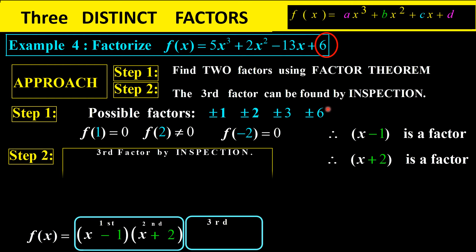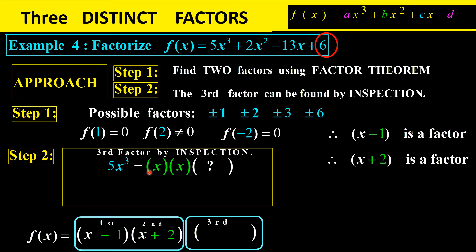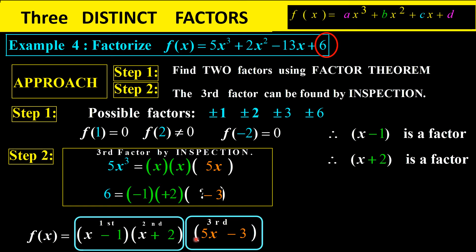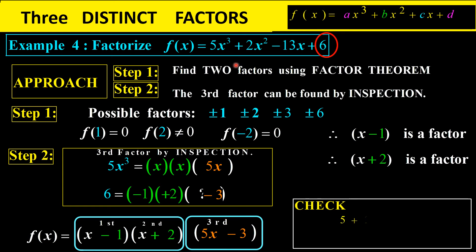With factors x minus 1 and x plus 2, we find the third by inspection. The leading term is 5x cubed; we already have x times x, so we need a 5x. The constant is 6; negative 1 times 2 is negative 2, and negative 2 times negative 3 gives 6, so the third factor is 5x minus 3. Verification: 5 plus 2 minus 13 plus 6 gives 0, and (1−1)(1+2)(5−3) also gives 0.